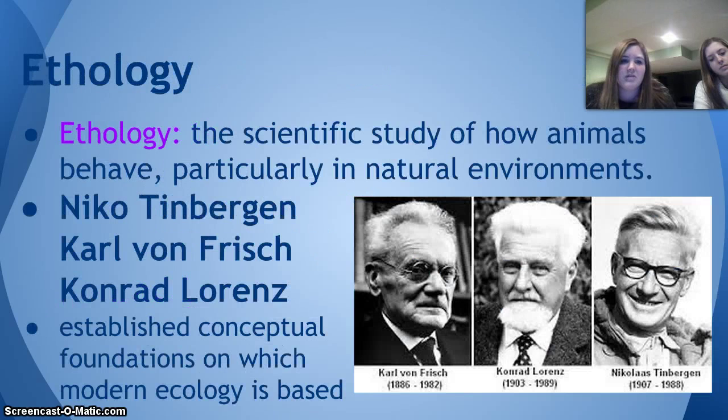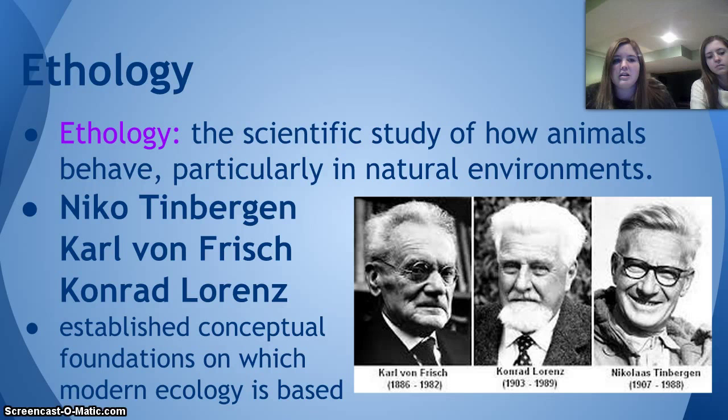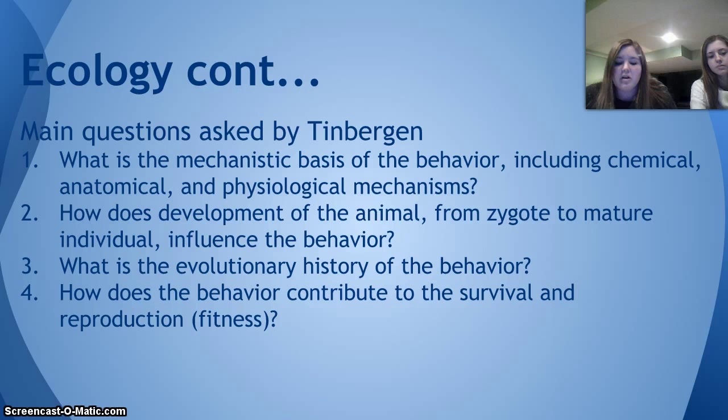Three famous ethologists are Nico Tinbergen, Karl Von Frisch, and Konrad Lorenz, and we're going to be talking about a bunch of their experiments later on. Ethology is the scientific study of how animals behave, particularly in their natural environments. These two question types were identified by Tinbergen: the first two are proximate questions dealing with mechanisms, and the second two are ultimate questions dealing with evolution.